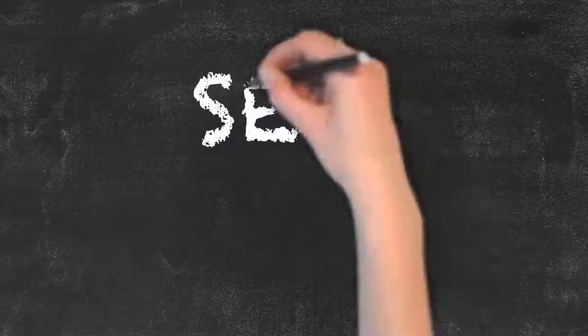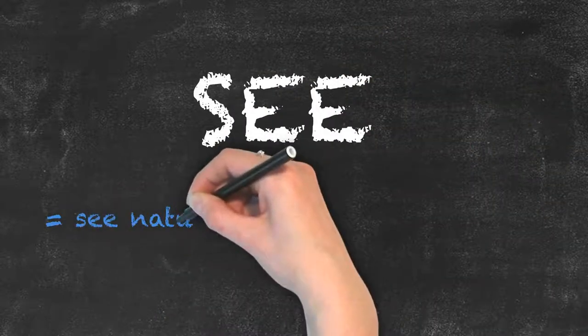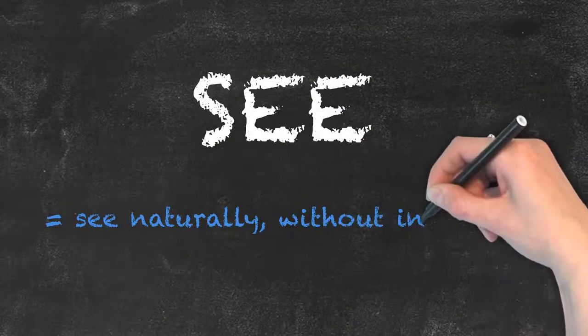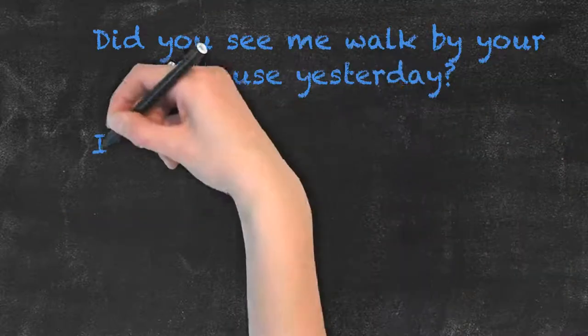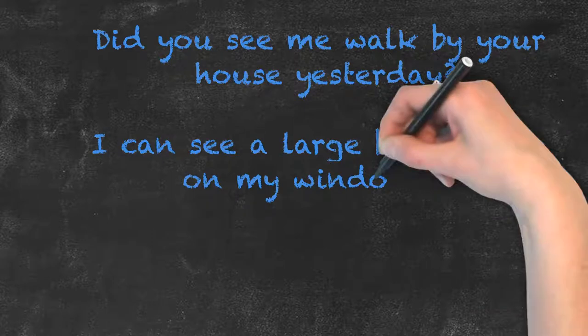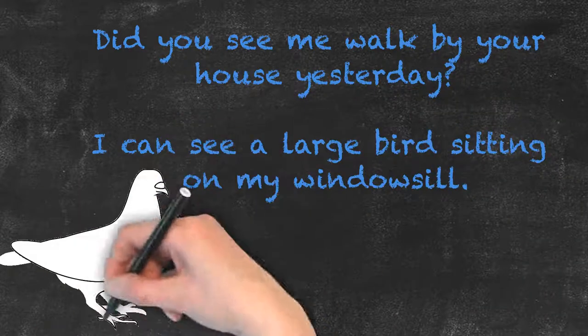When we use the word see, we speak about something that we see naturally, without intention. Such as in these examples. Did you see me walk by your house yesterday? I can see a large bird sitting on my windowsill.